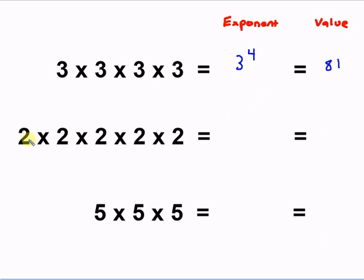In this case we have 2 to some power — count them up for yourself. It's 2 to the 5th power. 2 to the 5th power is 2 times 2, which is 4, times 2, which is 8, times 2, which is 16, times 2 is 32. So 2 to the 5th power is 32.